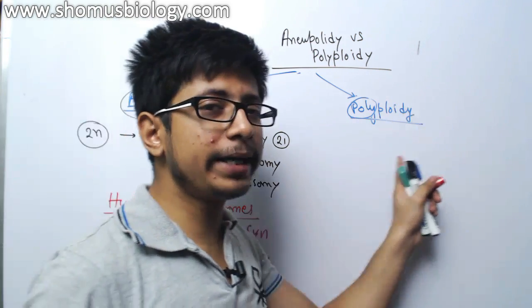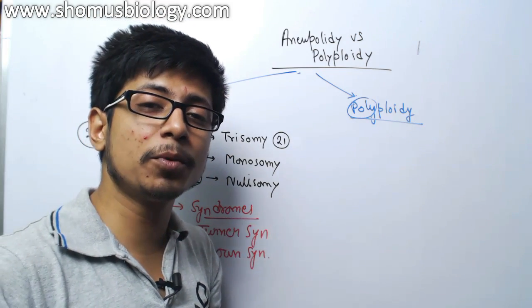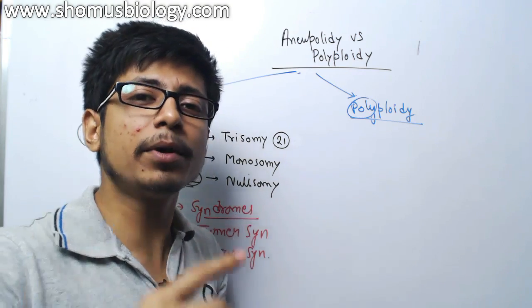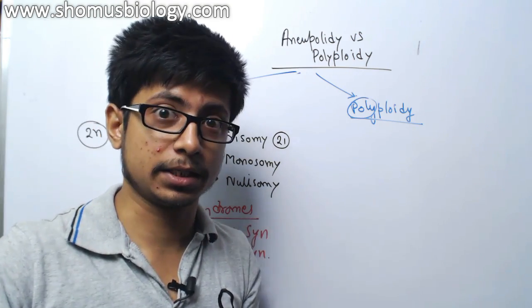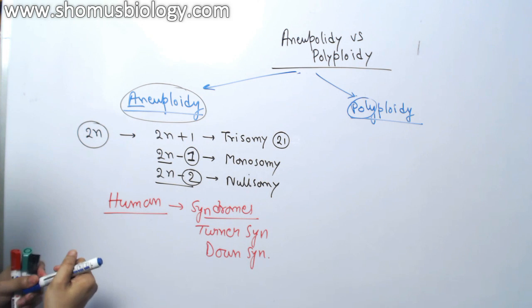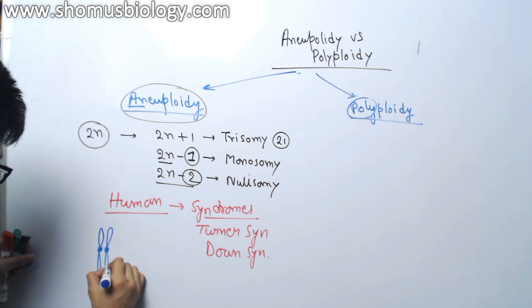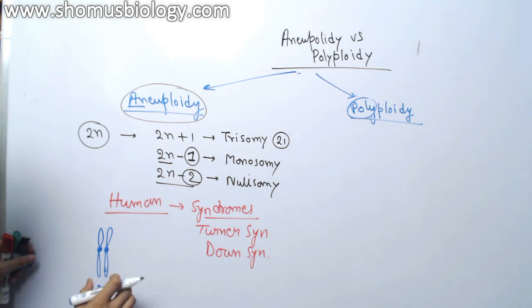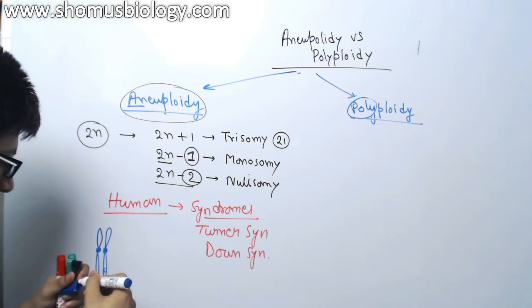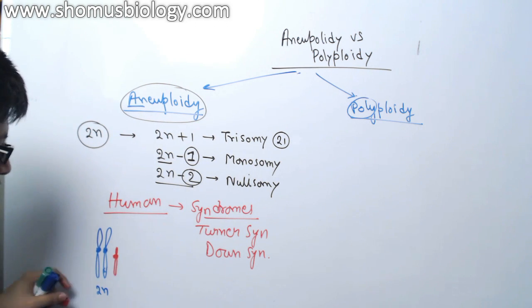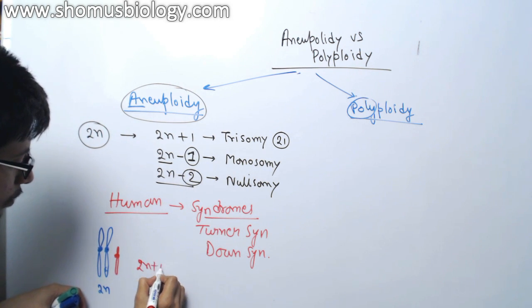While polyploidy is a situation where we see the change in chromosome number in set. The number of chromosome set will be changed. Let me draw the chromosome, it will be much clearer for you. This is a chromosome set. This is 2n because 2 chromosomes always present in pairs. Now, we get an extra chromosome from outside that's the trisomy. This is an extra chromosome, we call it 2n plus 1.